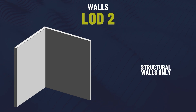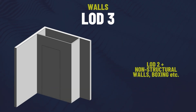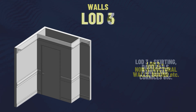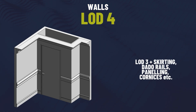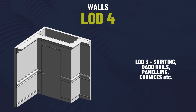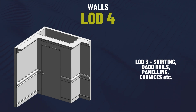Starting with walls: at LOD2 these are just structural walls. LOD3 adds non-structural walls like room partitions and boxing. By LOD4, details include architectural features like dado and picture rails, cornicing and intricate wood panelling.